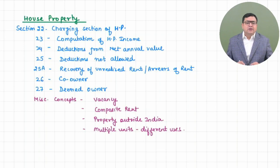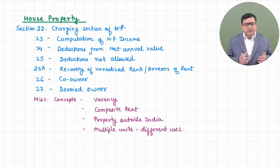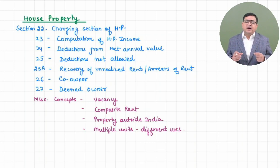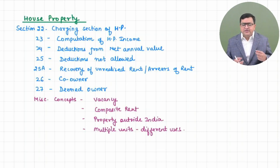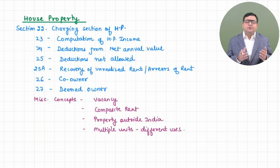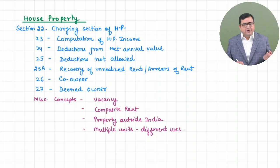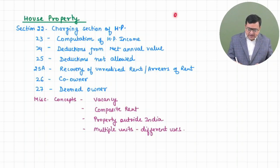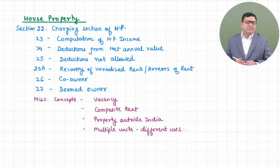That is how income from a property situated outside India could also be taxable. If there is a property used differently — one portion for self-occupation, another portion let out, or one portion used for your own business or profession — and it is a single property with different portions used differently, then we need to compute income under house property or PGVP accordingly.